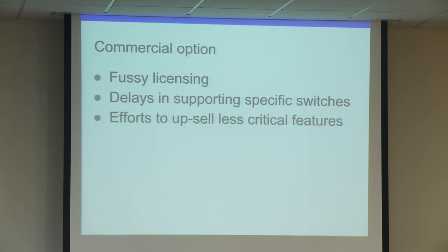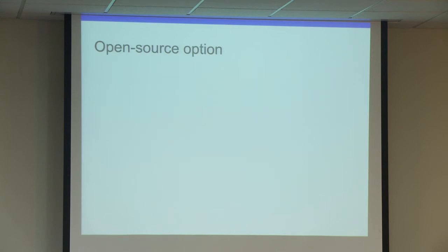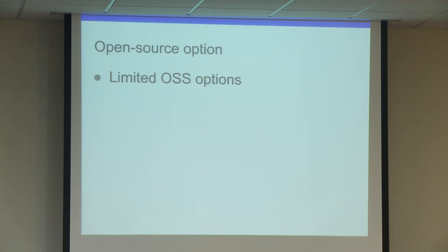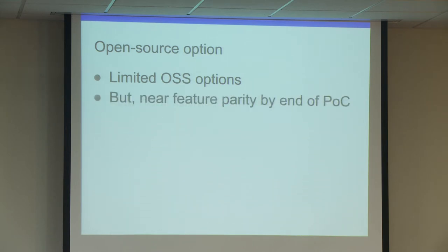Because of the business model, there were efforts to upsell us on less critical features while we were just trying to get basic functionality working. When we started the evaluation, there were very few open source options in the NAC space, which is why we went with a commercial off-the-shelf solution initially. But during our struggles, the open source options caught up and reached near-feature parity by the end of our proof of concept of the commercial product, because they're extensible and fixable by a community.